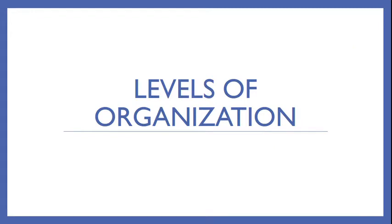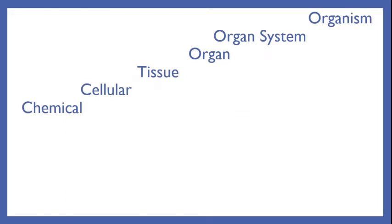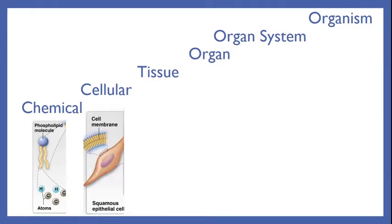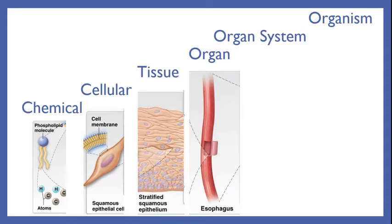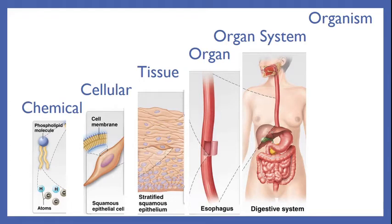Levels of Organization. What are the building blocks of an entire organism? What is your foundation? You start out at the chemical level. The chemicals come together to form a cell. Multiple cells come together to form a tissue. Multiple tissues come together to form a single organ. Multiple organs come together to form one organ system — this has a function in the body, such as the digestive system.